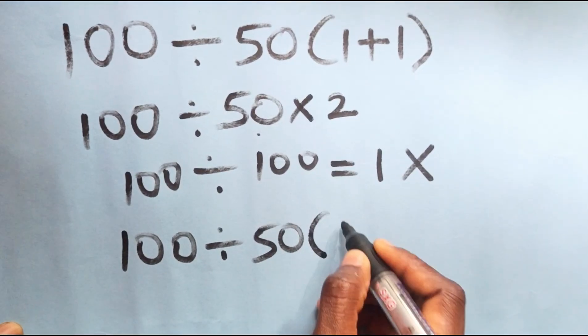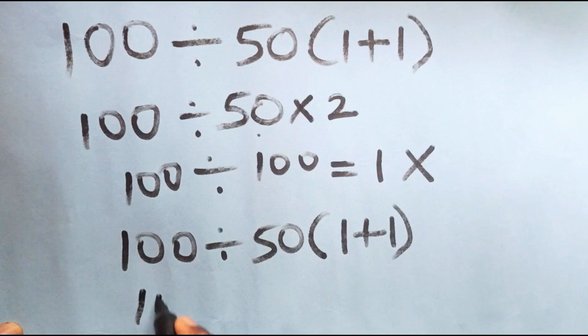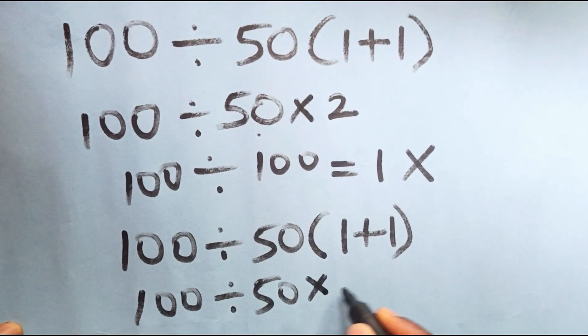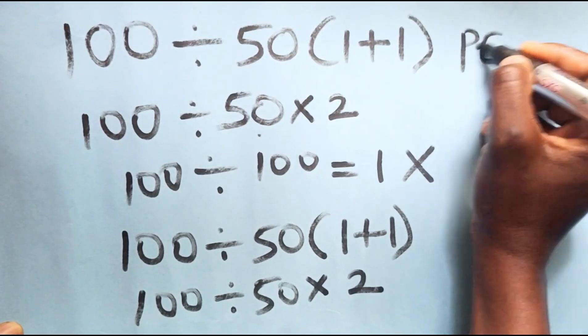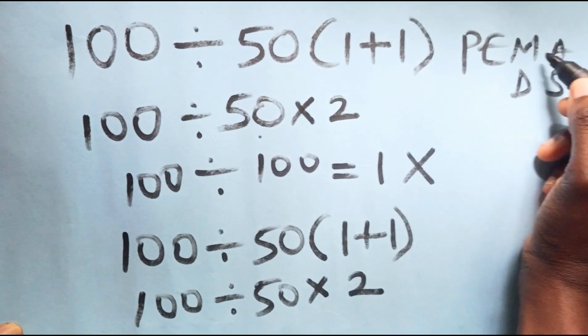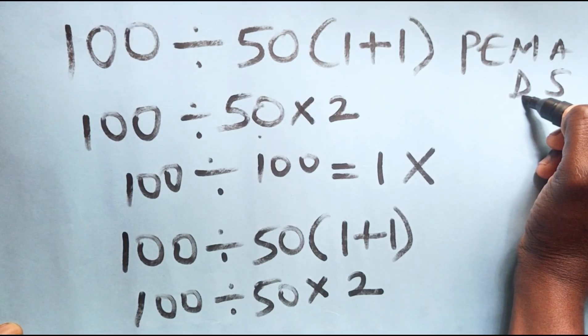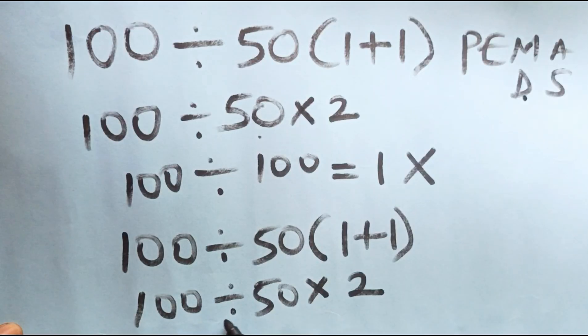100 divided by 50 times 2, but don't forget that we have PEMDAS. Multiplication and division have equal priority from left to right, so looking at our question now, division comes before multiplication.